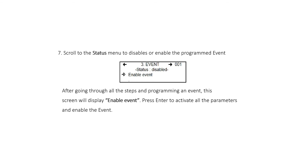Scroll to the Status menu to disable or enable the programmed event. After going through all the steps and programming an event, this screen will display Enable Event. Press Enter to activate all the parameters and enable the event.